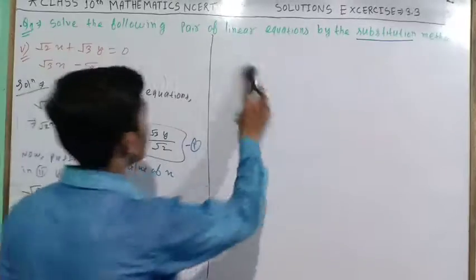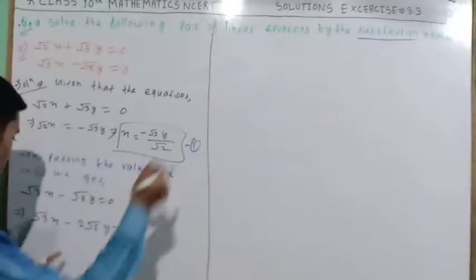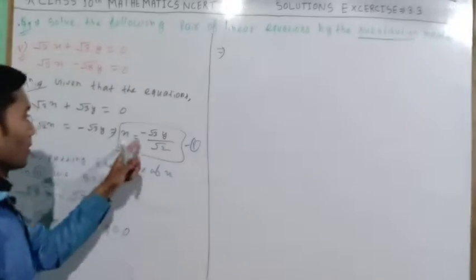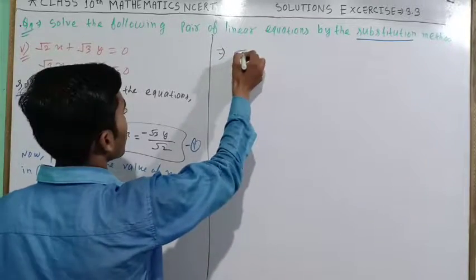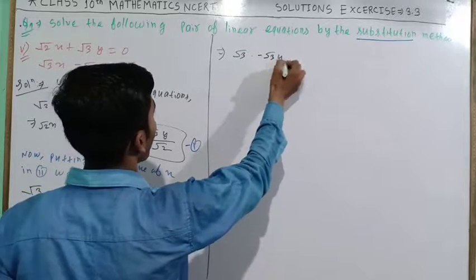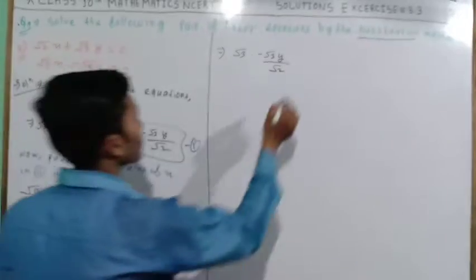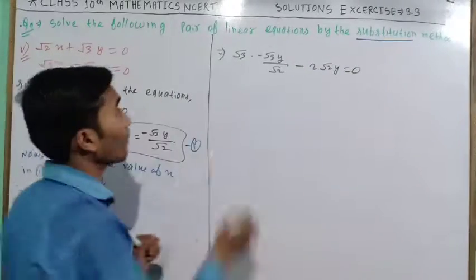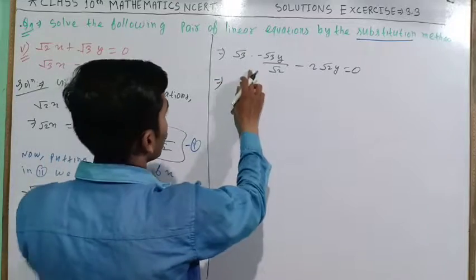Now substituting, we have √3 times (-√3y/√2) minus 2√2y equals 0.